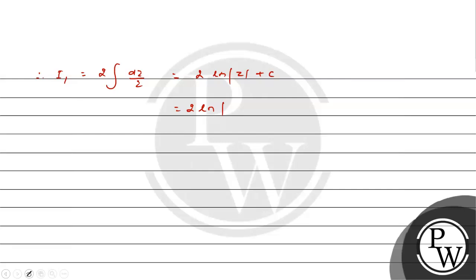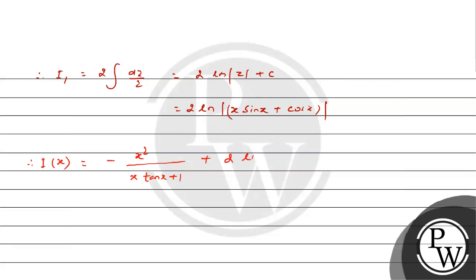Therefore i1 becomes 2·ln|x·sin x plus cos x|. Finally, i(x) equals minus x squared upon (x·tan x plus 1) plus 2·ln|x·sin x plus cos x| plus c. Given i(0) equal to 0: at x equal 0, we get 0 plus 2·ln|cos 0| equals 2·ln(1) equals 0, so c equals 0.